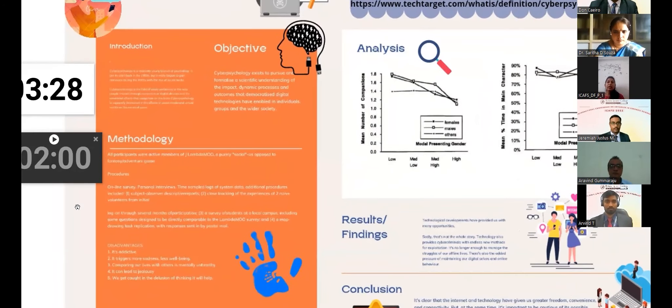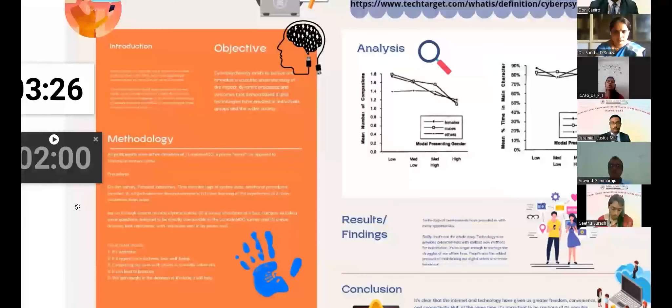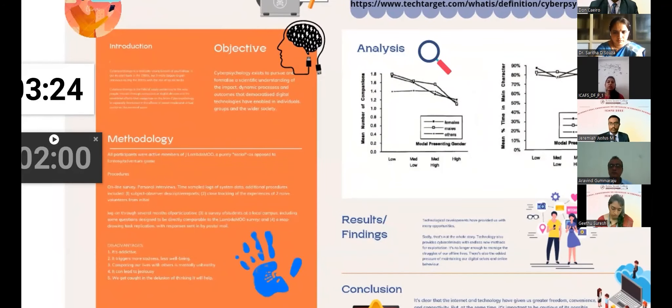This can be explained by taking a case study of Lambda Moo. It was a video game in the 1990s. The research was done through online survey, personal interviews and some additional procedures. The result found was the strong prevalence of personal one-on-one social interactions over larger social gatherings. There are some more recent case studies such as Blue Whale game and PUBG, which affected the minds of children and adolescents.